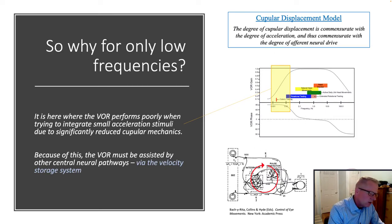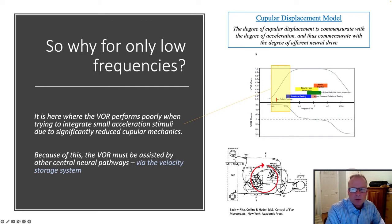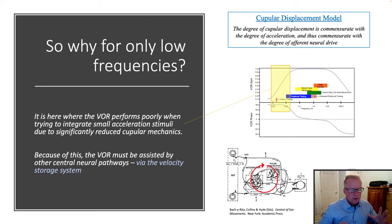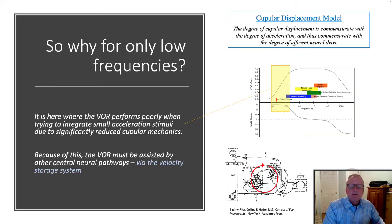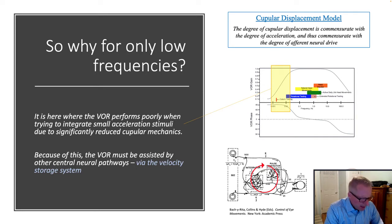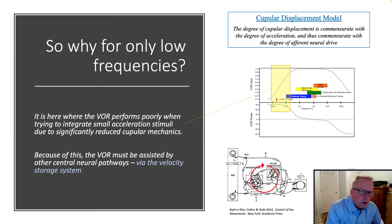Why is this? It's like that for low frequencies, and I'm going to come back to the cupular displacement model. The low frequencies of chair rotation are so weak that the cupula is only minimally displaced, producing an afferent drive that's pretty weak — almost so weak that it's somewhat inefficient to drive the VOR.